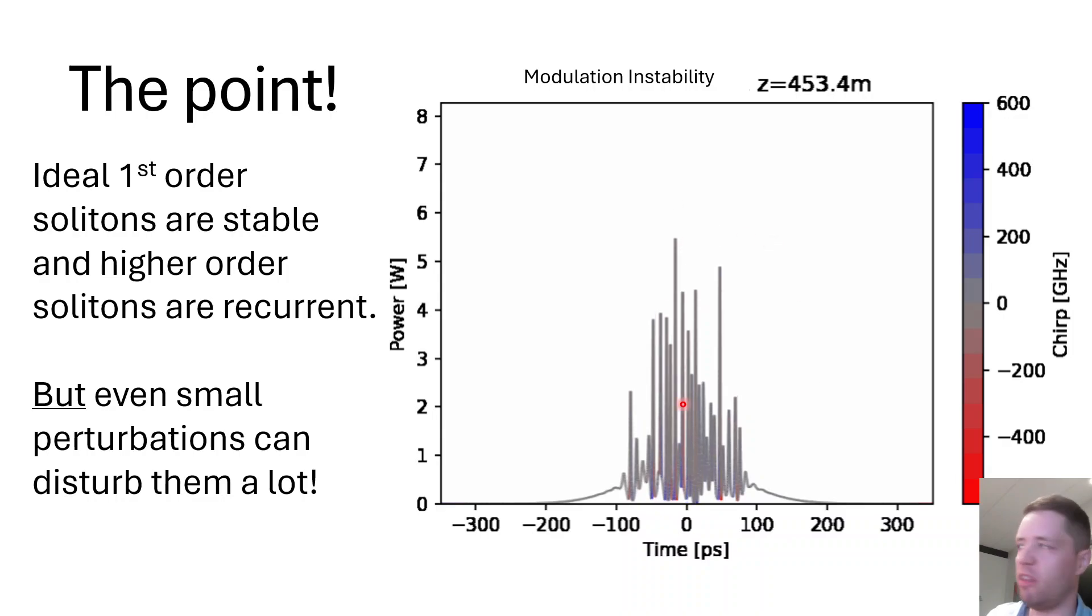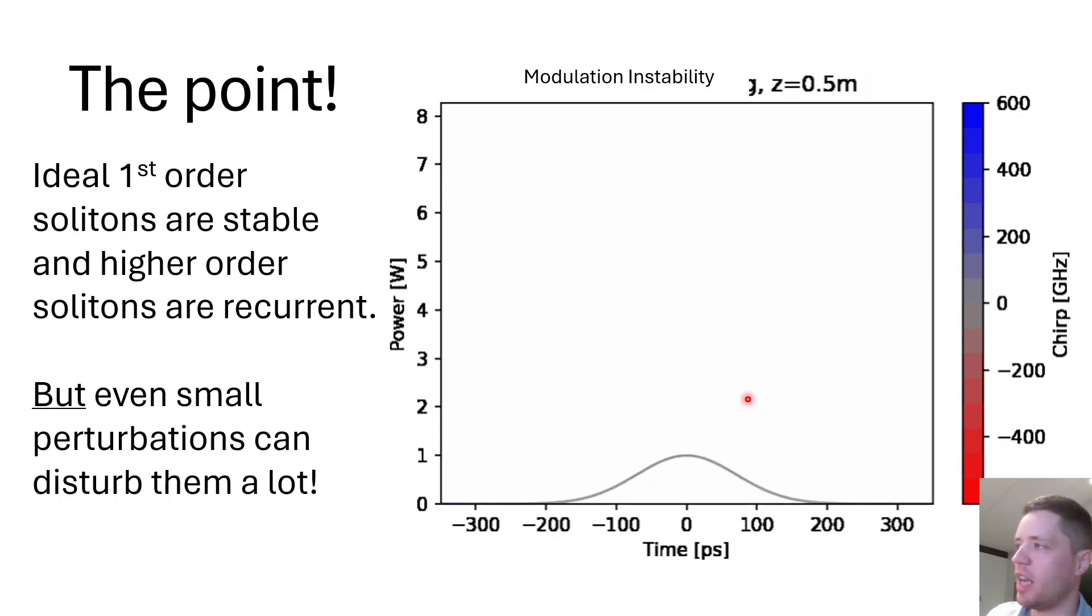And in this animation here from a previous video we also see that having a soliton and then adding a tiny amount of amplitude noise is actually enough for the pulse to completely break down as these amplitude fluctuations are amplified as we move forward and then turn the whole soliton into just a big train of spiked pulses right here.